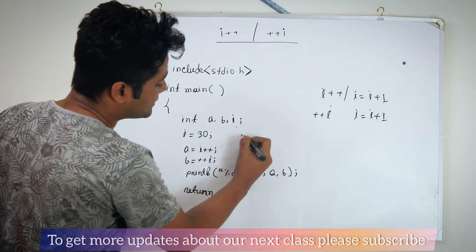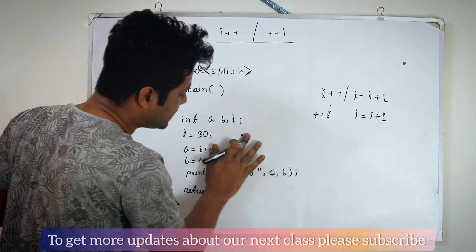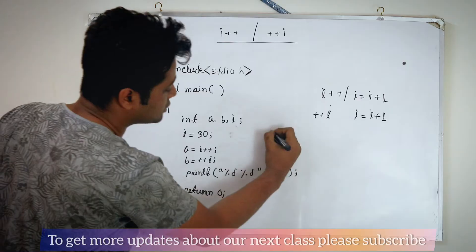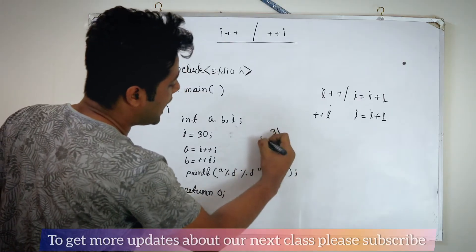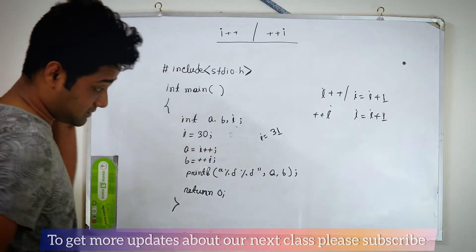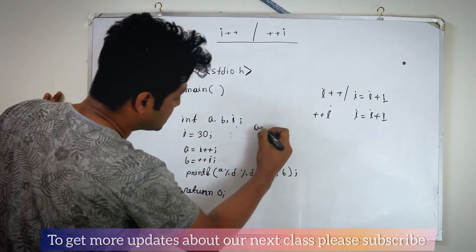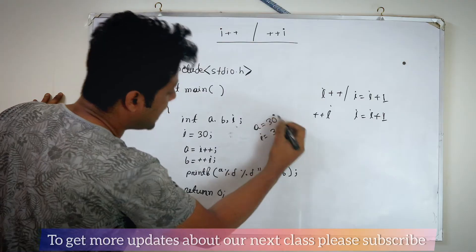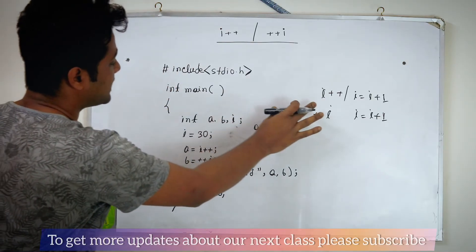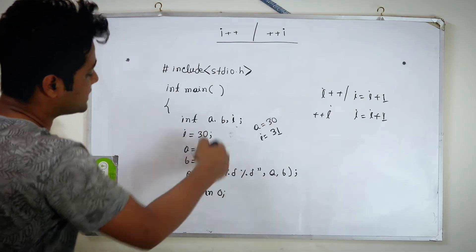i++ means the i value becomes 31. i++ — i equal to 31, i plus plus. A is equal to 30.